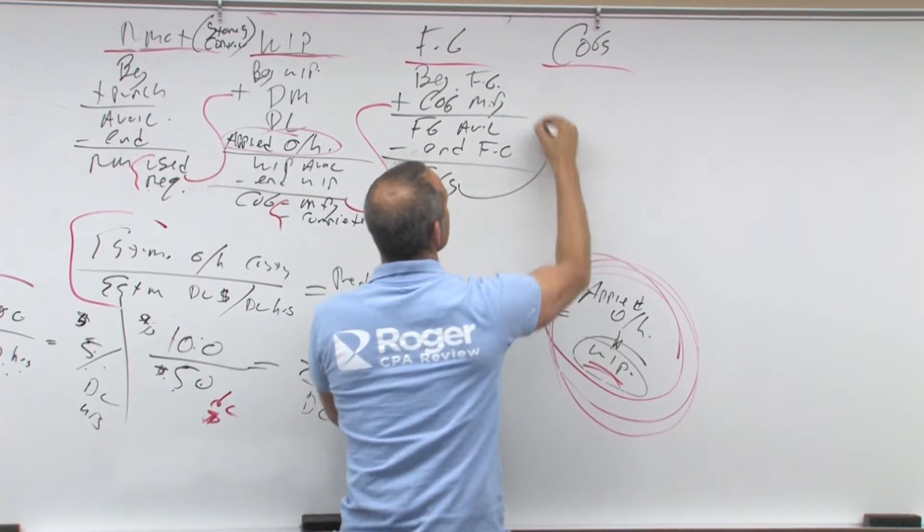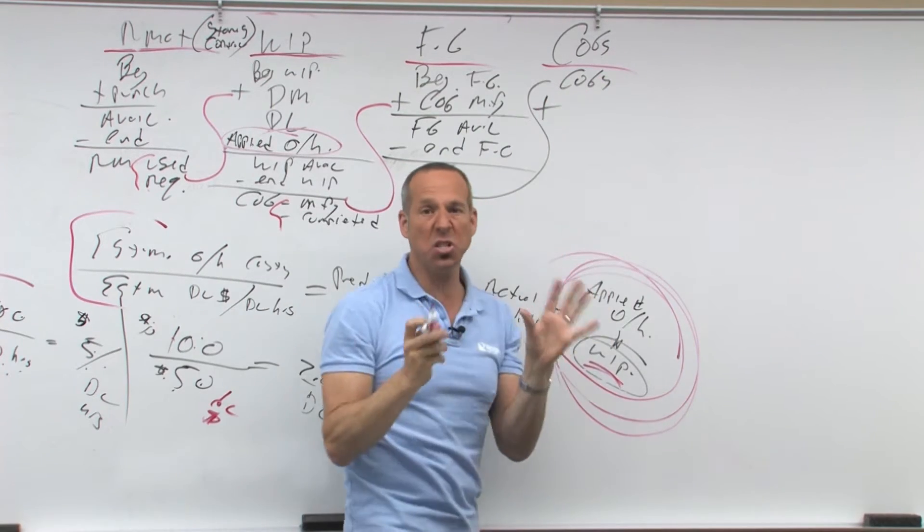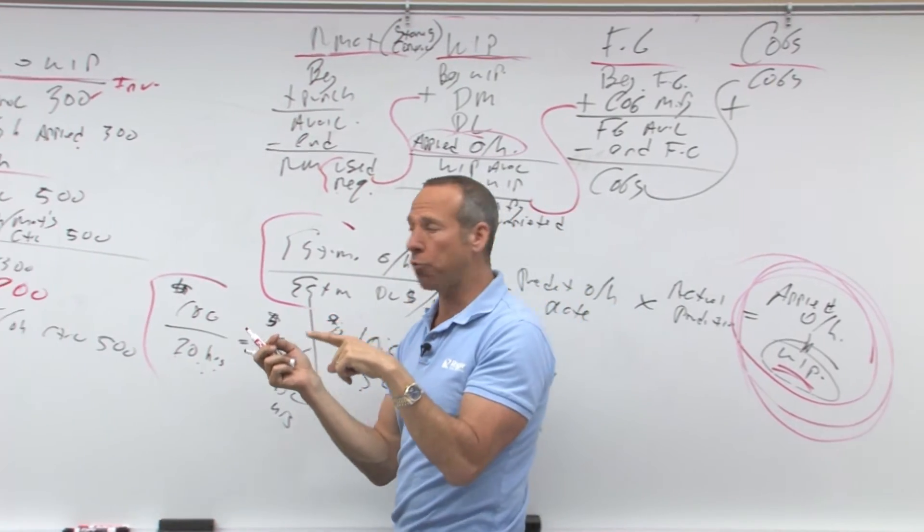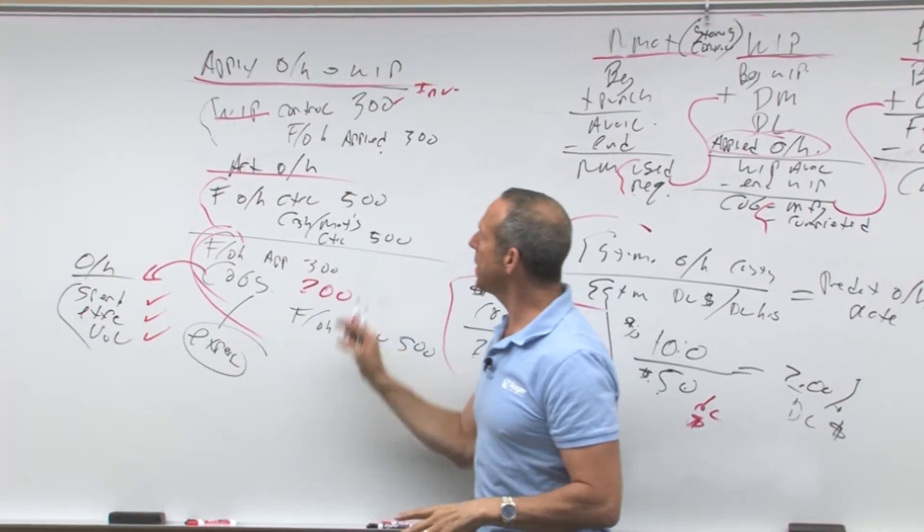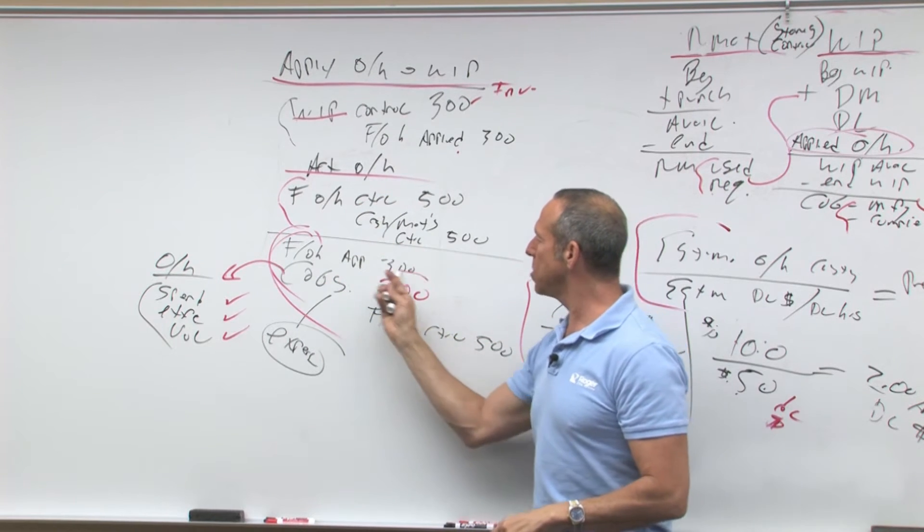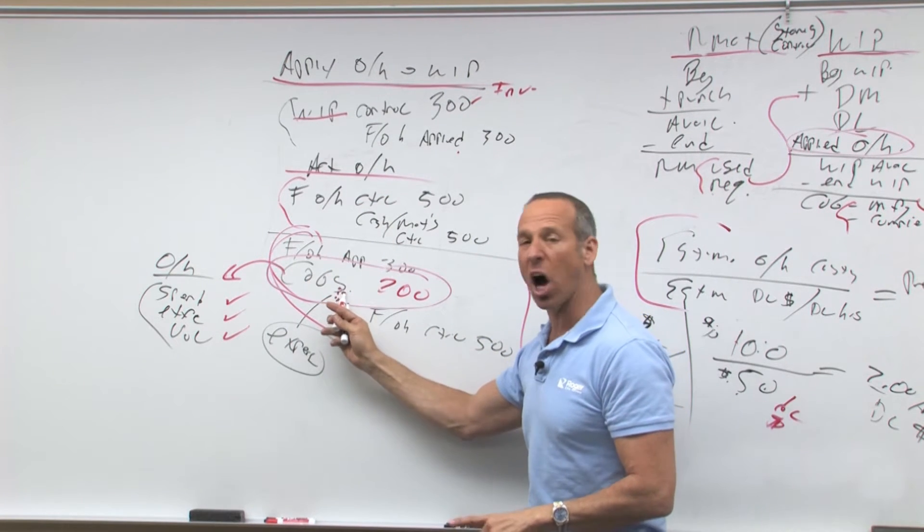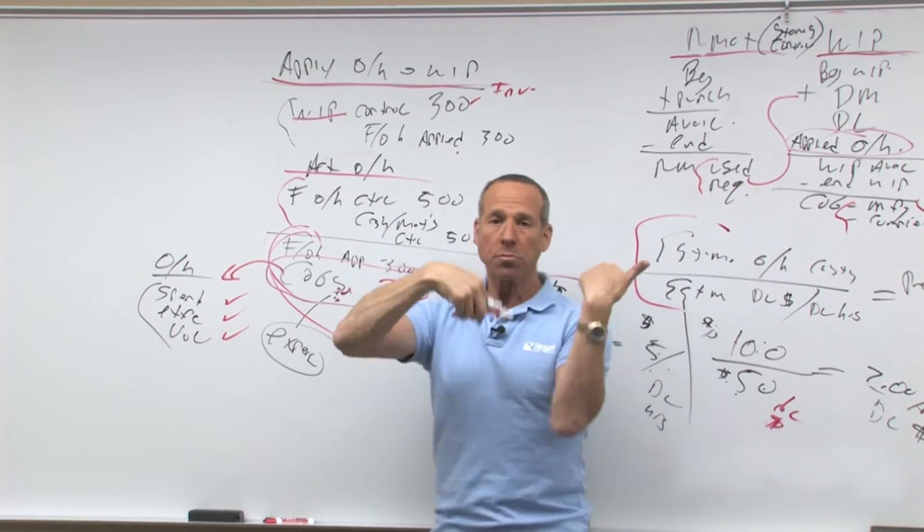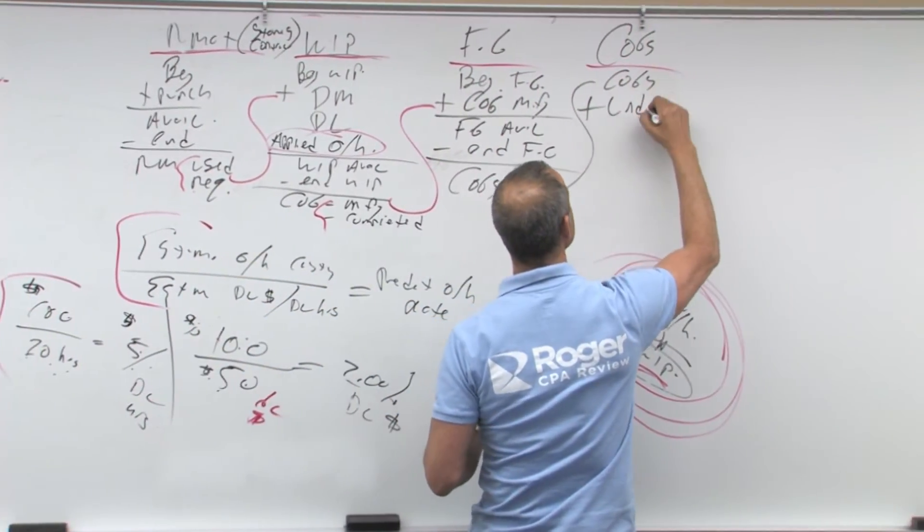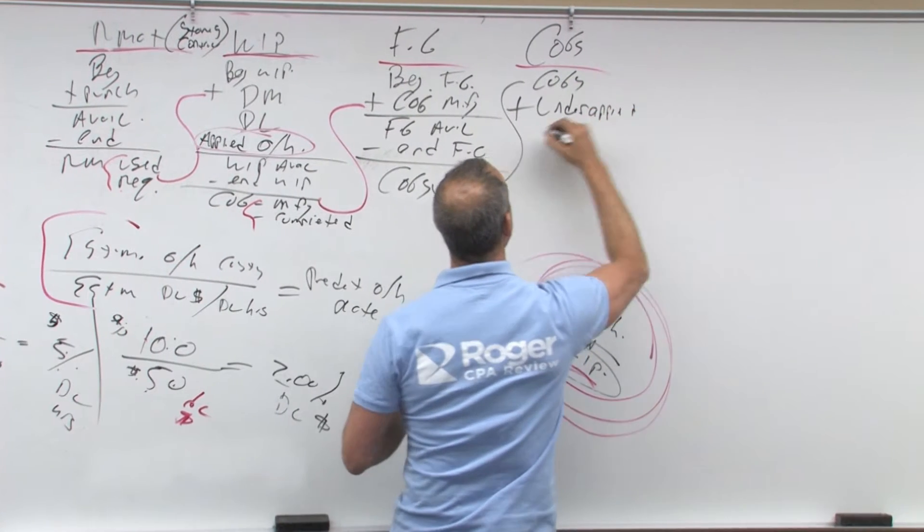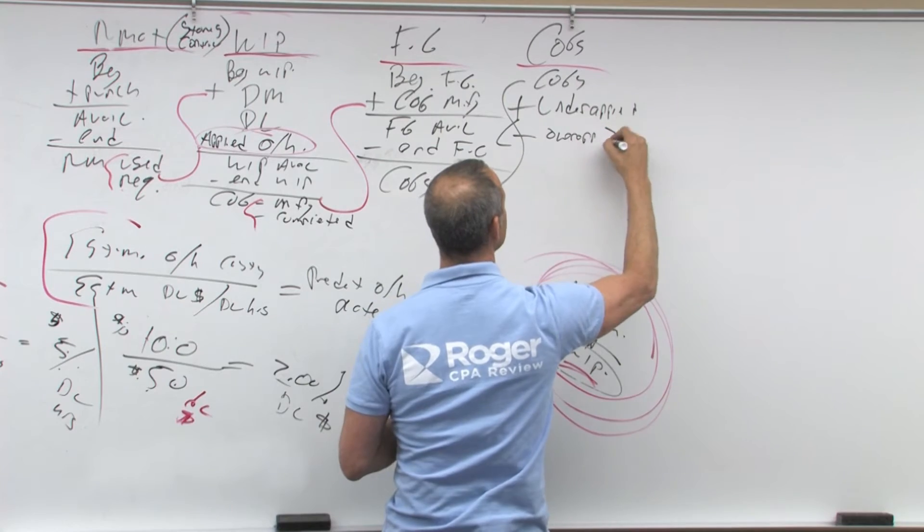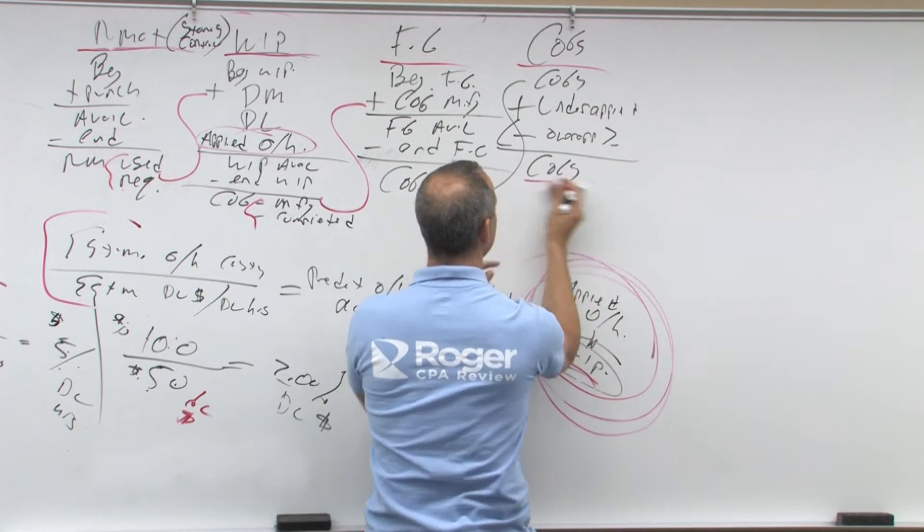Now notice, you bring this in, cost of goods sold plus, this is where you adjust for your over, under. Remember over here when we had over or under applied? What happened is we applied 300, we actually spent five, we closed these out, the difference went to cost of goods sold right here because we were under applied. So let's bring it back down. That's going to be plus your under applied or minus your over applied equals the real cost of goods sold number.